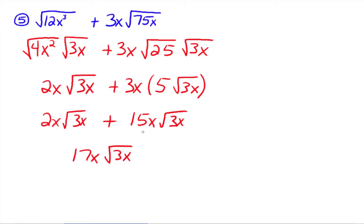We can combine to get 17x times the square root of 3x, since 2x plus 15x equals 17x. Notice that we also need the coefficients to be like terms in order to add them. For example, if it was just 2 times the square root of 3x instead of 2x, we would not be able to add 2 and 15x together because they're not like terms. So all those rules still apply and come into play.